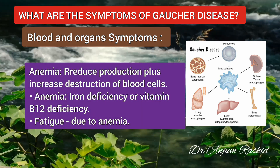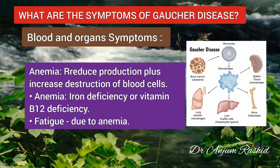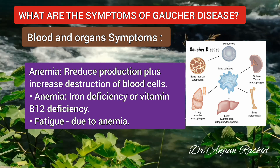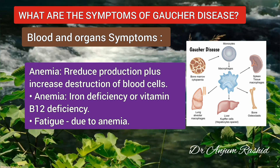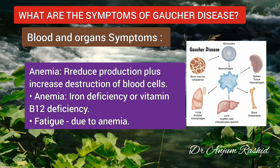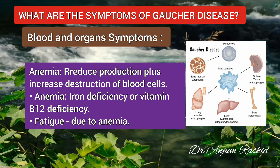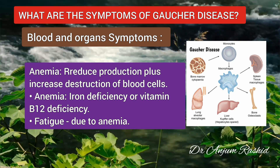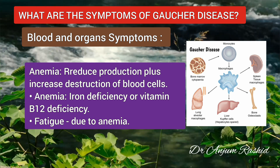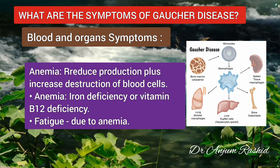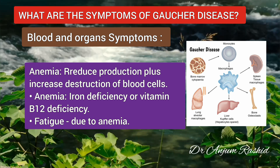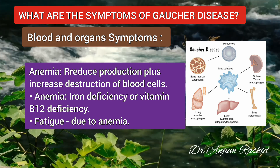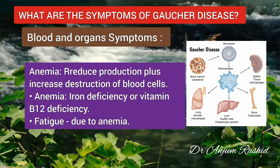Next is anemia. Gaucher cells in the bone marrow reduce the production of blood cells, and the spleen quickly destroys the blood cells the body does make. These processes can cause anemia, or low levels of red blood cells, reducing the oxygen carried to all parts of the body. Patients can also become anemic for other reasons such as iron deficiency or vitamin B12 deficiency. Anemia causes fatigue, and it is common for patients to experience excessive tiredness, though not all fatigue in Gaucher disease is due to anemia.